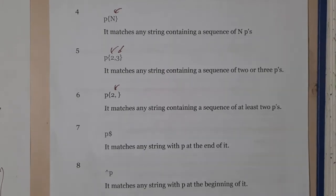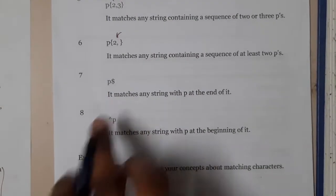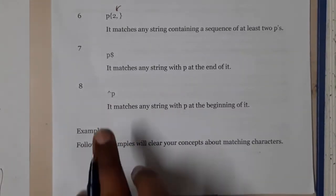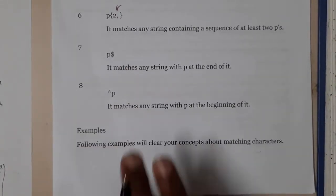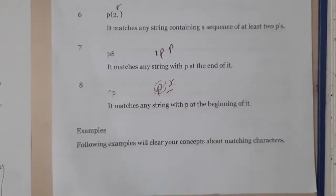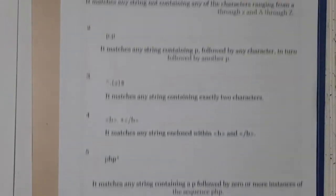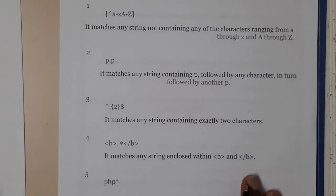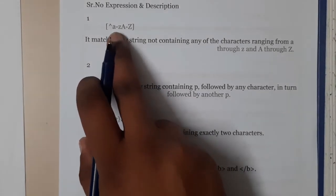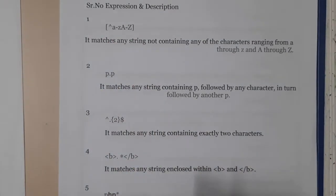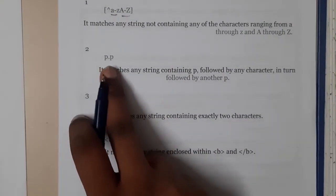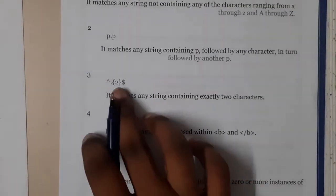'^p' means at the beginning — p should be at the beginning of the string. 'p$' means at the end — p should be at the end. So for example, if you notice here we have an up-arrow, meaning the string should start with a lowercase letter and end with a capital letter. 'p.p' can be of any format in the middle.